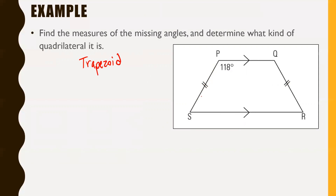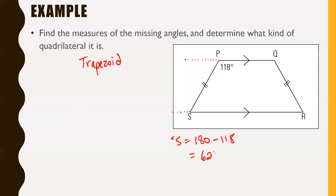In terms of the angles, the fact that there are two parallel sides actually helps us. Remember when we talked about parallel lines and transversals? Imagine that this line continued and this line here was actually a transversal. Since we could consider that a transversal, this angle and this angle would be the same — so it would be 118 degrees over here. But since it's supplementary to angle S, angle S equals 180 minus 118, which gives us 62 degrees.